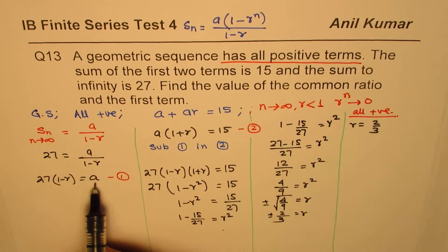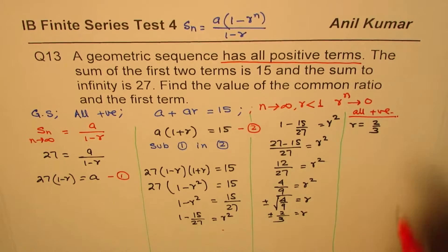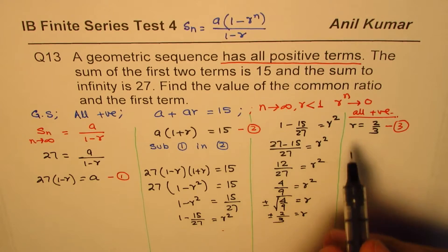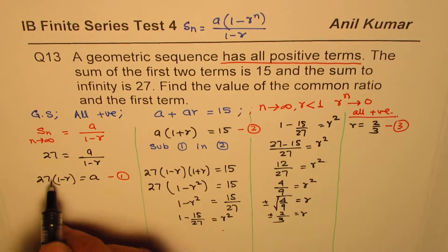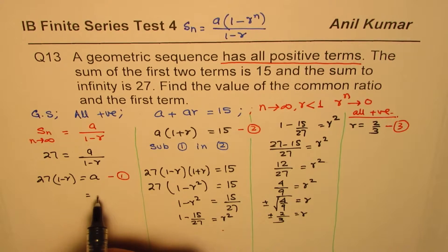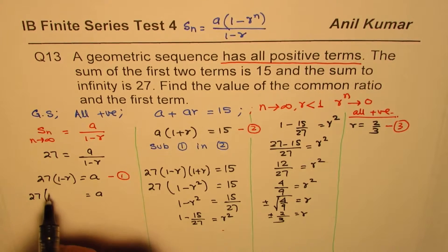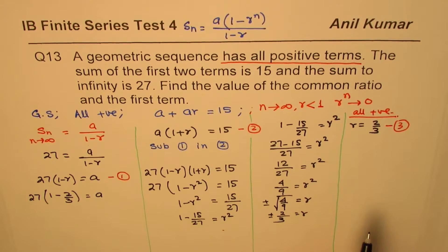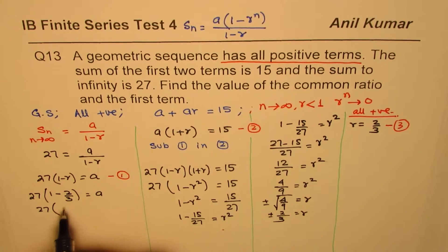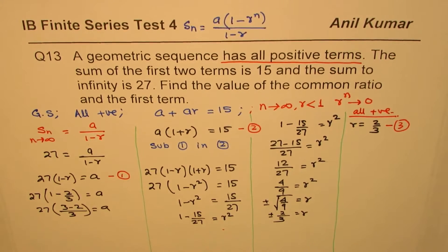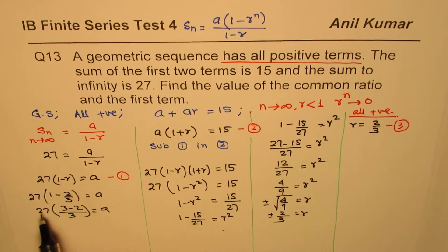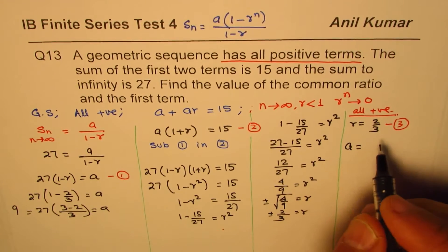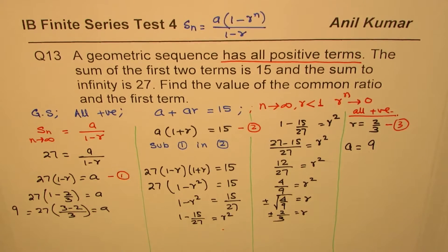Now with r = 2/3, let's find the first term a. Using a = 27(1 minus r): a = 27 times (1 minus 2/3) = 27 times (1/3). One third of 27 is 9. So a equals 9.